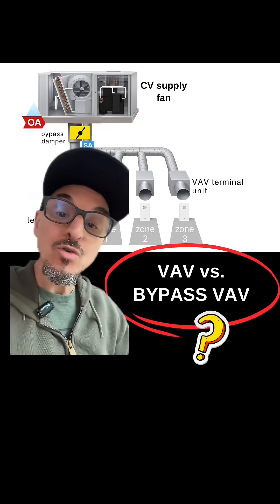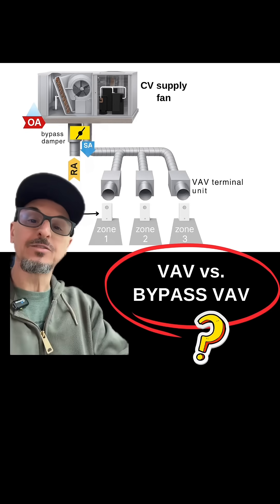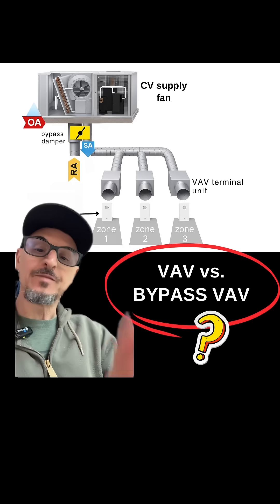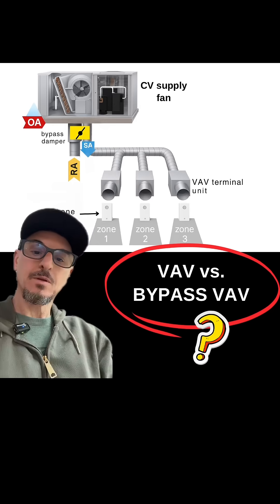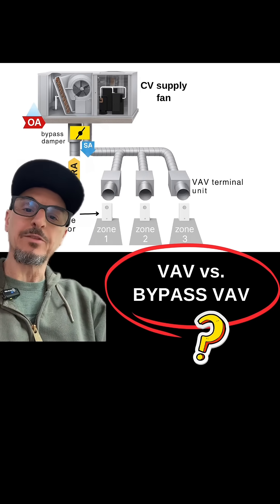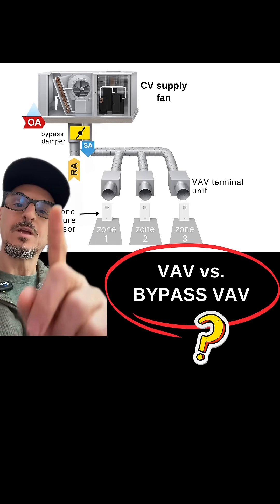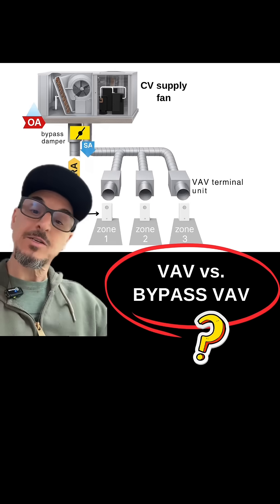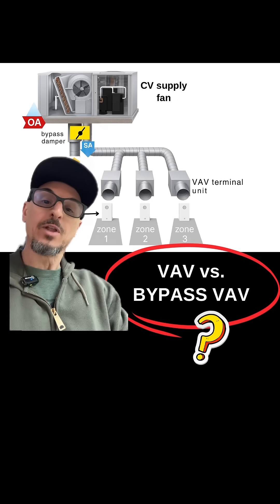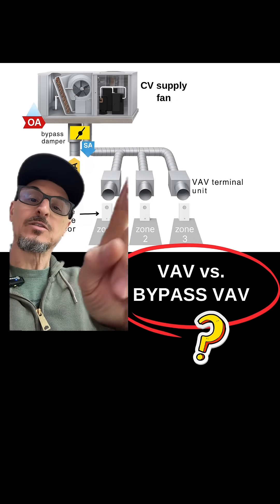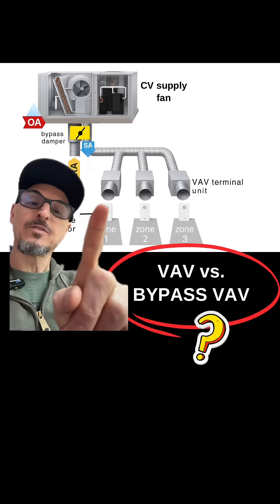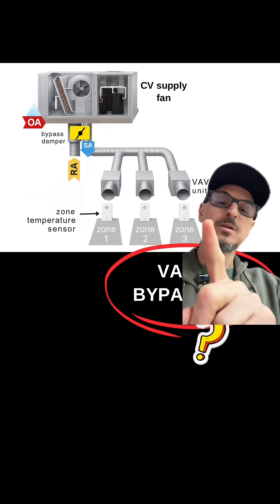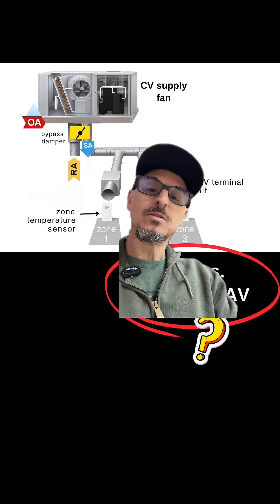Do you know the difference between a true VAV system and a bypass VAV system? Both these systems operate on the same principle. You have your packaged or split air conditioning unit producing cold air, ducted to the zones, and every zone has a zone damper and a sensor.